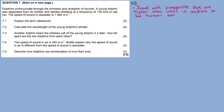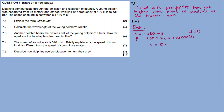Question 7.2: Calculate the wavelength of the young dolphin's whistle. Let's take out the data: we have velocity, and we have the frequency of the dolphin. When doing our calculations we don't use kilohertz; instead we convert to hertz. To convert from kilohertz to hertz it's 180 times 1000, so 180,000 Hz. We want the wavelength, so which formula includes velocity, frequency, and wavelength?